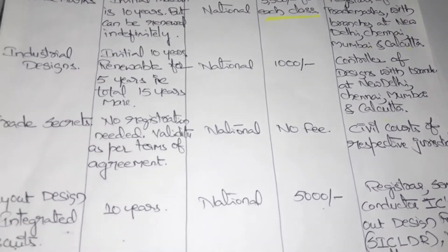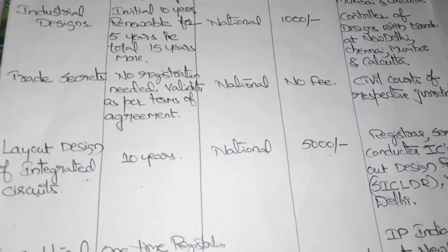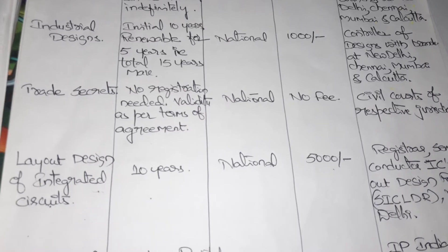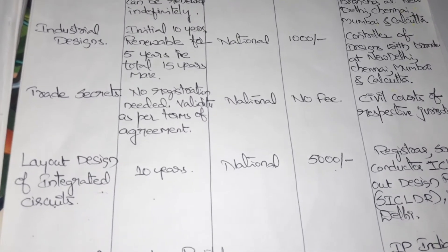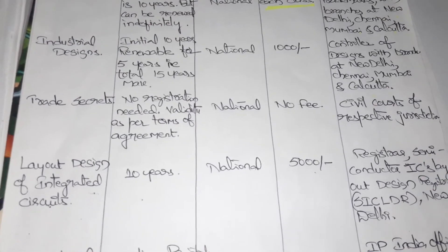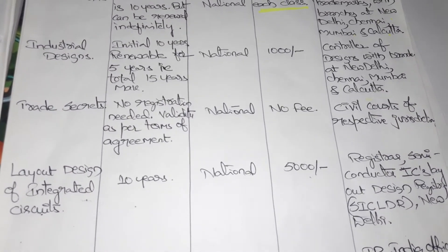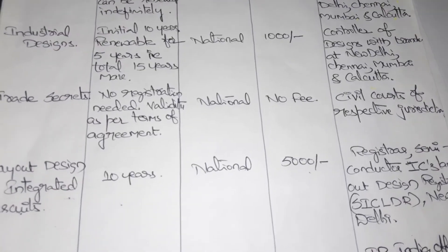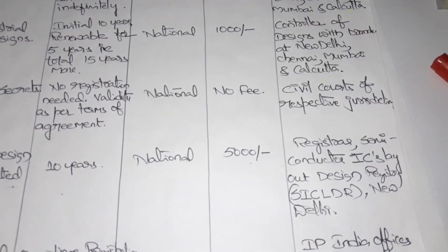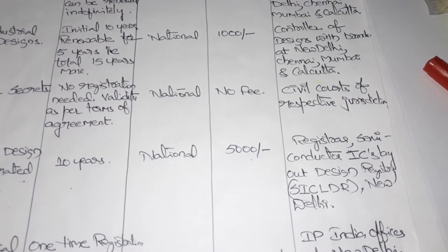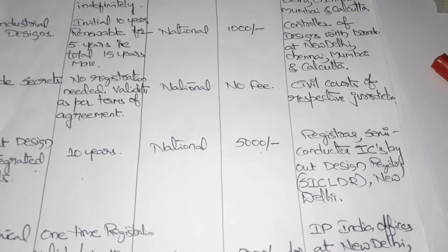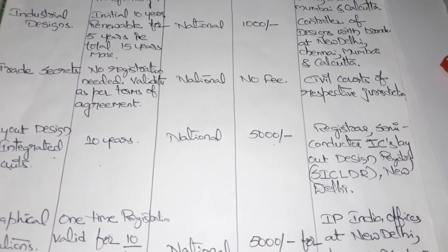For the layout design of integrated circuits, protection is up to 10 years with no renewal option. The fee to protect your integrated circuit layout design is 5,000 rupees. The authority is the Registrar of Semiconductor ICs Layout Design (SICLD), located in New Delhi.